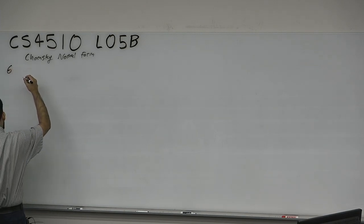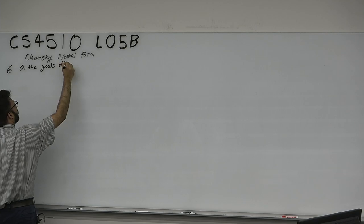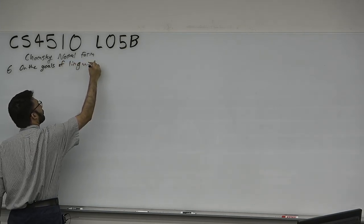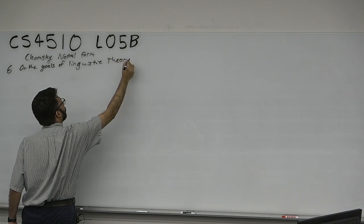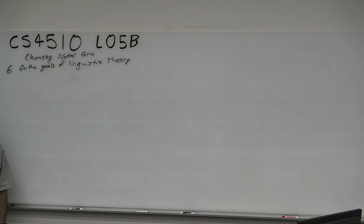Chapter six is on the goals of linguistic theory. Chomsky reads the literature and observes — I talked about it a little bit last time — what is the goal of a scientific theory. You have a finite number of observations and it should be able to predict the future. You take a finite number of observations, you apply Occam's razor, and you should be able to predict new observations. If your theory is unable to predict new observations, you have to change your theory.